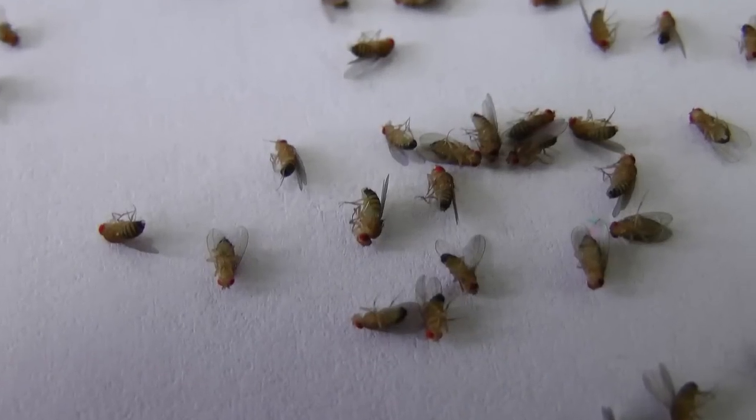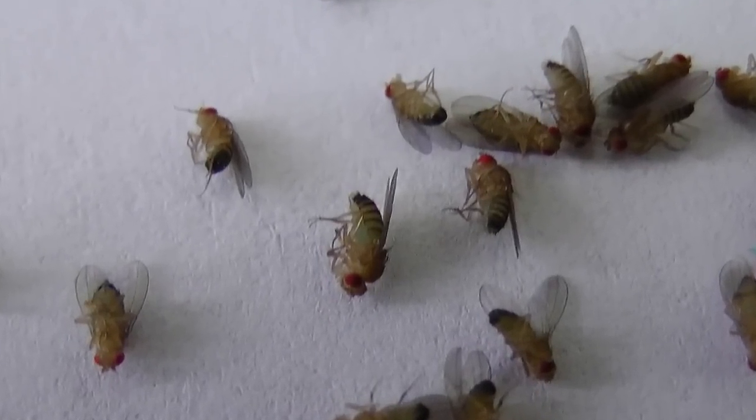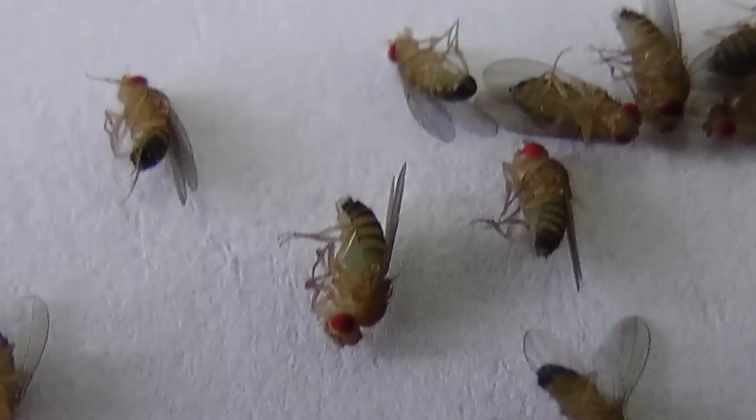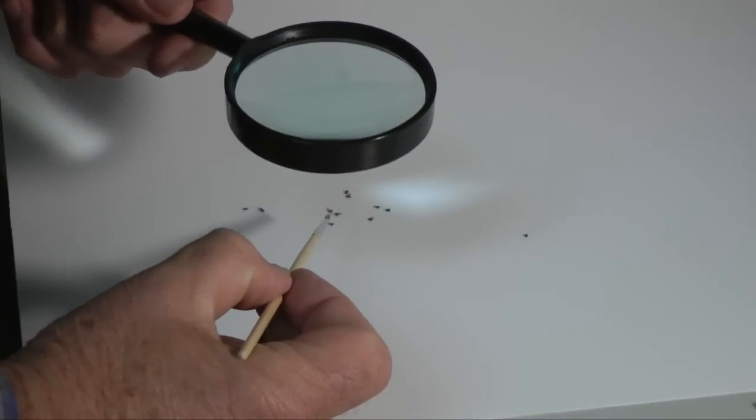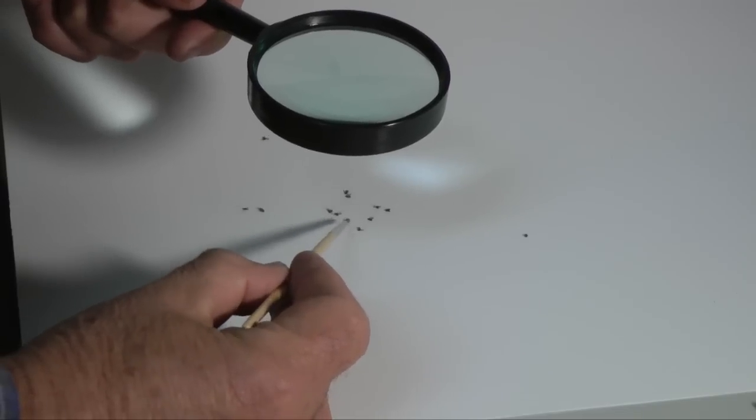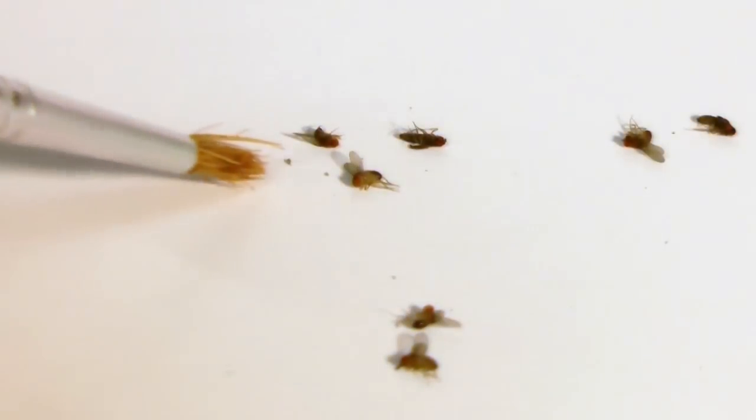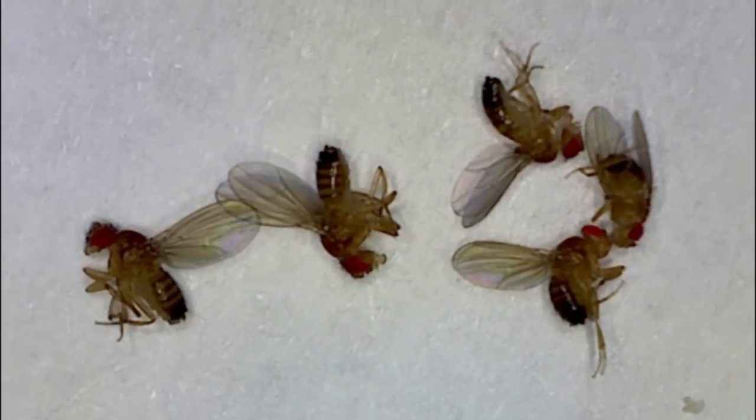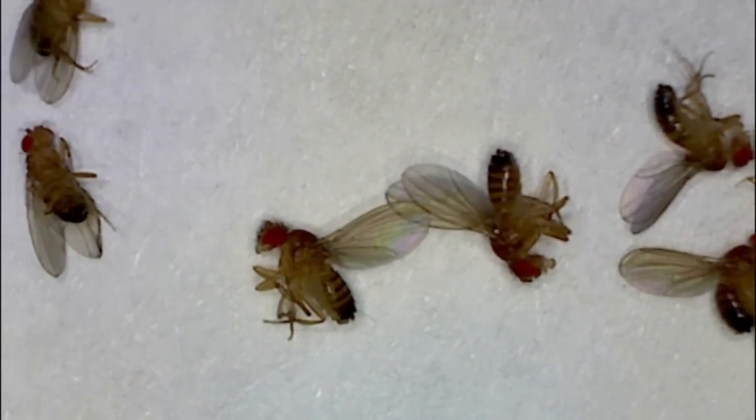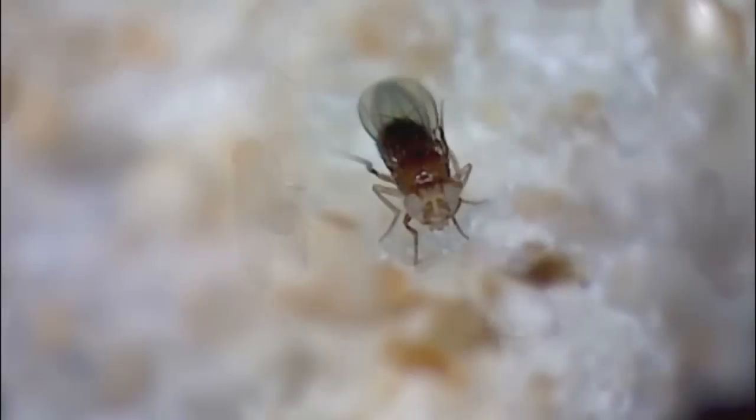These flies are the first generation from the white-eyed male, red-eyed female cross. With a small brush and hand lens, sort the flies by eye color and sex. If your results are the same as Morgan's, all the flies have red eyes. The white-eyed trait seems to have disappeared. Or has it?